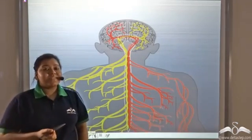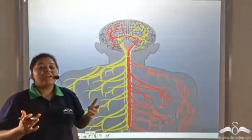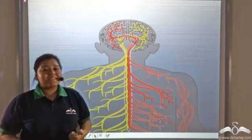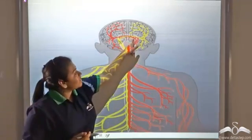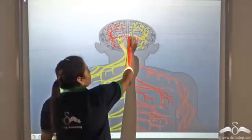What did we study today? We studied about this part, the outermost part of the brain which is known as the cerebrum. Cerebrum consists of two equal halves which is connected by this junction which is known as the corpus callosum.